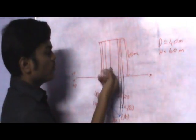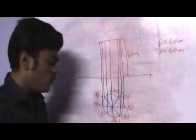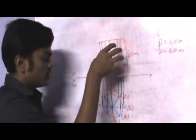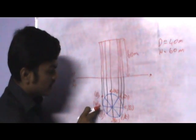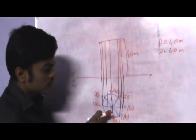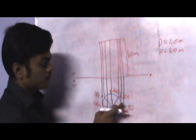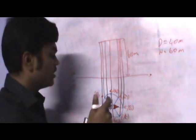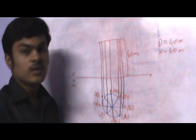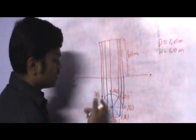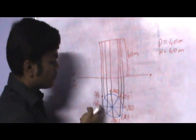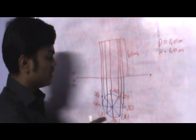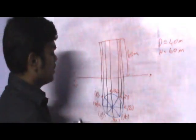Now we are going to see the front view. If you look from the front, you can see points A, H, G, F, and E. Points D, C, and B won't be visible because they are present behind A, H, G, E, and F respectively.